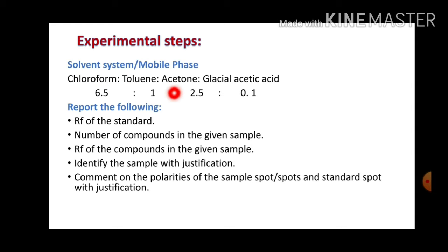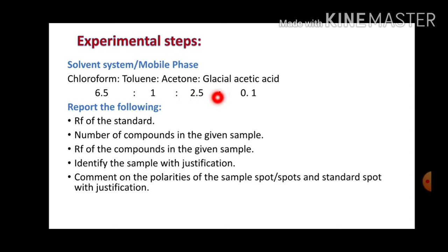In this experiment, the mobile phase solvent system is a combination of four solvents: chloroform, toluene, acetone, and glacial acetic acid in volumes of 6.5, 1, 2.5, and 0.1 ml respectively. The expected results require reporting the RF values of standards, the number of compounds identified in the given sample, the RF value of the unknown sample, identification of the sample with justification, and a comment on the polarity of the sample or standard spots with proper justification.